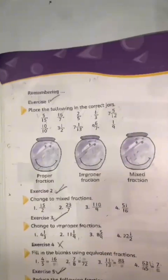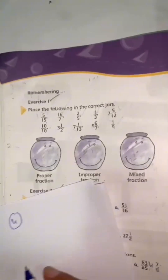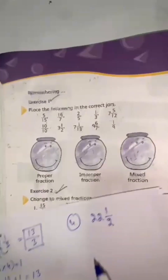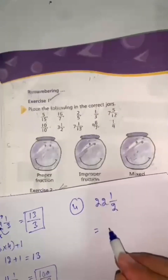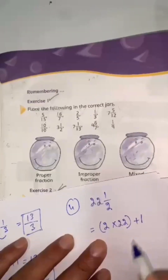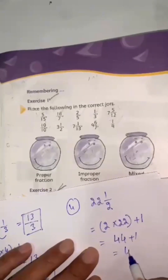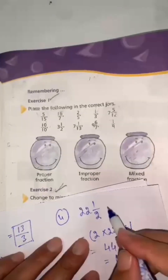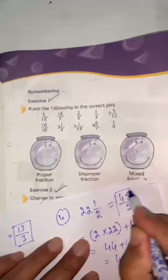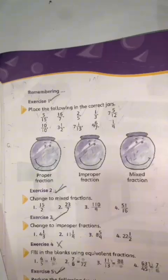Question number 4: 22 whole number 1 by 2. So 2 multiply by 22 plus 1: 44 plus 1 equals 45. So the answer is 45 divided by 2. Exercise 3 is now finished.